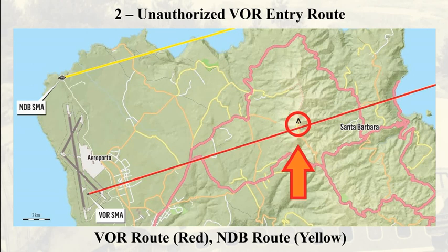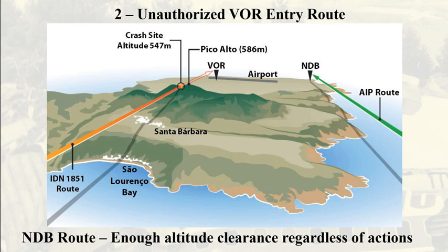In this comparison of NDB and VOR entry routes, one can see that the authorized NDB course would lead the plane on a more northern heading, while the VOR route takes the plane over the elevation of Pico Alto — where the accident occurred — the area outlined in the circle. As seen in this northeastern view of the island, the significance of this action is that if the jet had flown the NDB route, shown in green, it would have been over lower terrain and the sea. This would have provided enough clearance to the ground regardless of the altitude actions that followed. The VOR route, in red, would end up leading the airplane directly over Pico Alto.